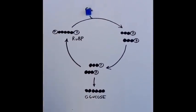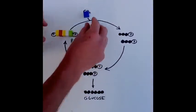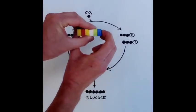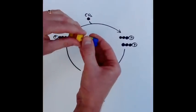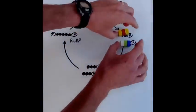The Calvin cycle starts when a five-carbon molecule, ribulose bisphosphate, combines with this one carbon from carbon dioxide to make six carbons, which immediately gets split into these two three-carbon molecules here. Those get reduced.